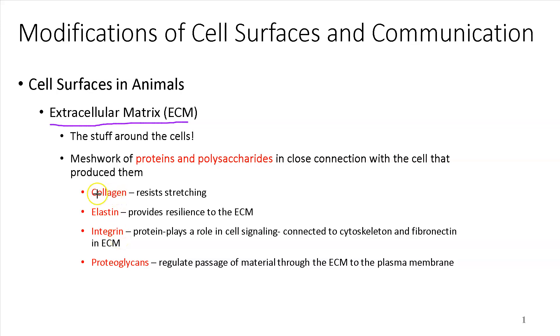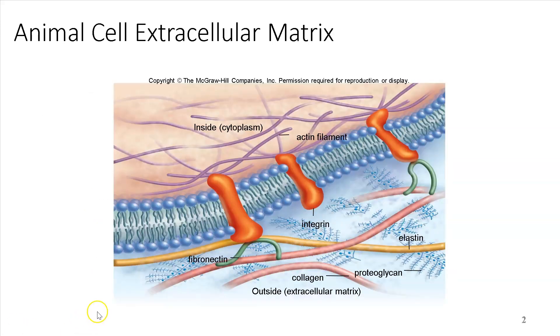There's examples of proteins out there like collagen, which resist stretching. There's collagen products out there to help reduce lines. Elastin, which provides resilience to the ECM. Integrin, which is a protein that plays a role in cell signaling, which we'll talk about a little bit later. And then finally proteoglycans. It regulates passage of materials through the ECM to the plasma membrane. So this is kind of how the anatomy looks. You can see outside, this is inside the cell, outside the cell, and you can see integrin and collagen, and proteoglycans. So this is the extracellular matrix.